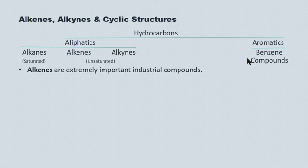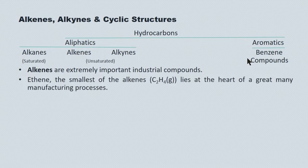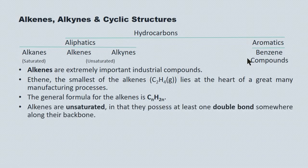Getting back to the alkenes — alkenes are extremely important in industrial compounds. Ethene, which is the smallest of the alkenes at C2H4, lies at the heart of a great many manufacturing processes. The general formula for the alkenes is CnH2n. They're unsaturated in that they possess at least one double bond somewhere along their backbone.